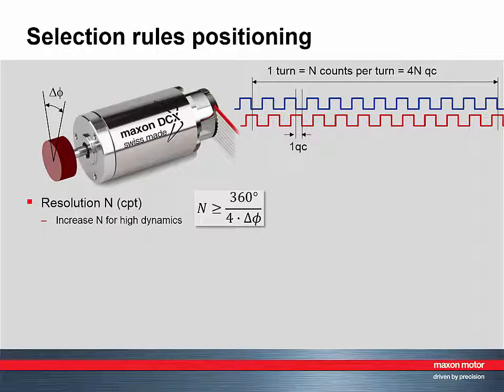Some selection rules for positioning applications. The encoder resolution in counts per turn should be higher than 360 degrees divided by the required position accuracy, delta phi in degrees. Due to the evaluation in quad counts, we can divide this number by four.